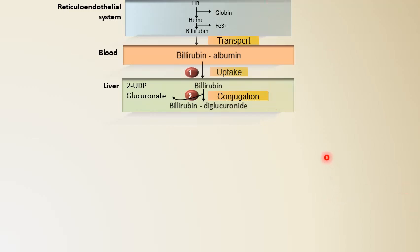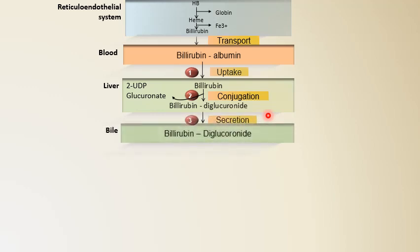After conjugation inside the liver, bilirubin diglucuronide is secreted into the bile. This secretion is carried out by an active transport mechanism and is the rate-limiting step for the entire process of hepatic bilirubin metabolism.